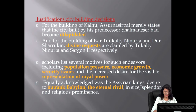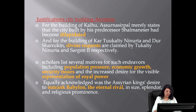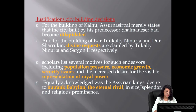Justifications for these decisions are not elaborately cleared in inscriptions. For the building of Kalhu, Ashurnasirpal mainly states that the city built by his predecessor Shalmaneser had become dilapidated. For the building of Kar-Tukulti-Ninurta and Dur-Sharrukin, divine requests are claimed by Tukulti-Ninurta and Sargon II respectively. Nevertheless, scholars listed several motives for such endeavors, including population pressure, economic growth, security issues, and the increased desire for the visible representation of royal power. Equally acknowledged was the Assyrian king's desire to outrank Babylon, the central rival, in size, splendor, and religious prominence.